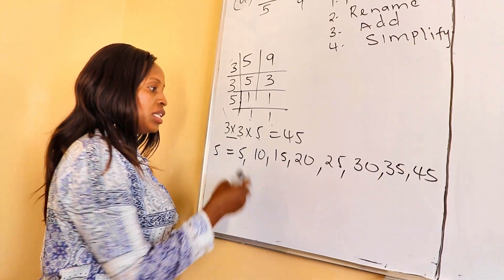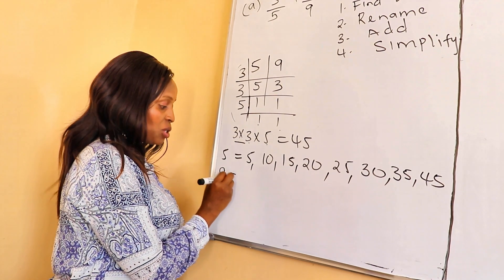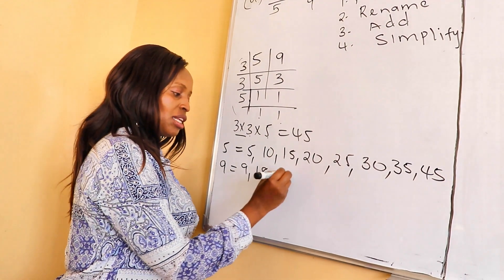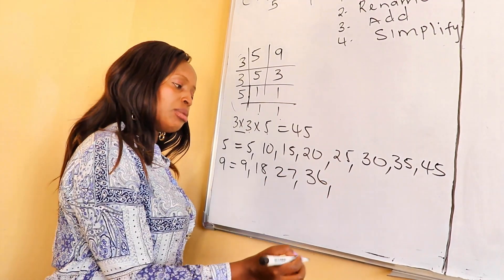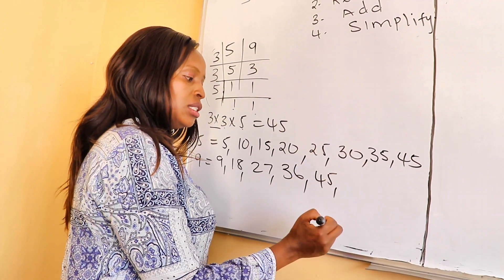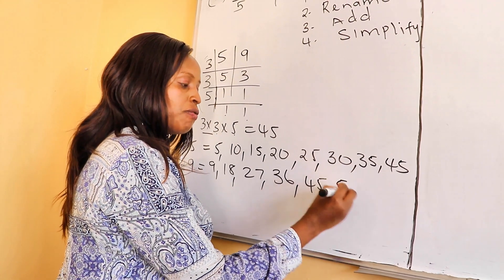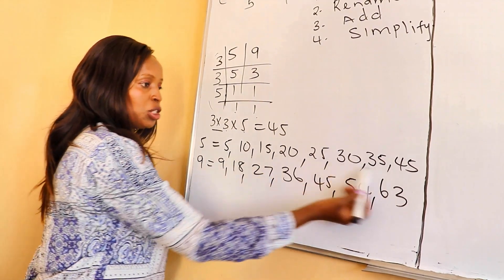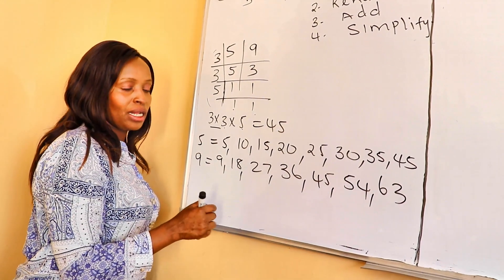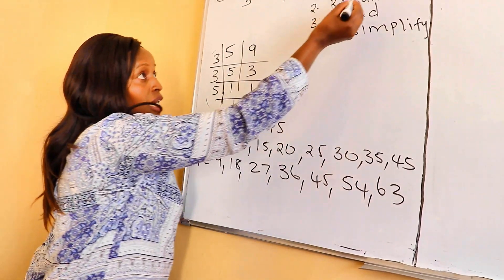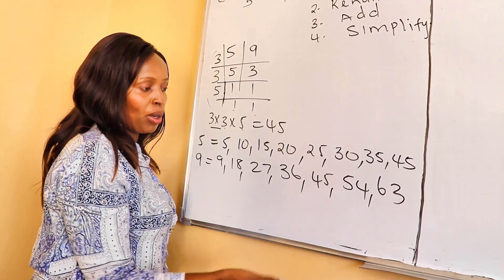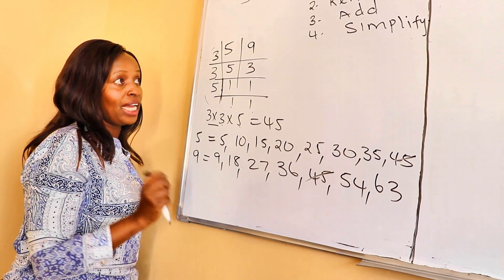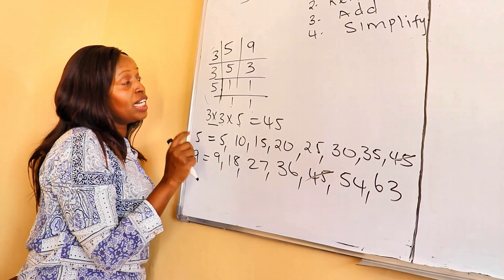Now, let's do also multiples of 9. 9 times 1 is 9, times 2 is 18, times 3 is 27, times 4 is 36, times 5 is 45, times 6 is 54, times 7 is 63. And now, when you look at these multiples, we will pick a common one but the least one. That is LCM, least common multiple. Which multiple is common? 45 and 45 is common. Therefore, the LCM of 5 and 9 is 45.